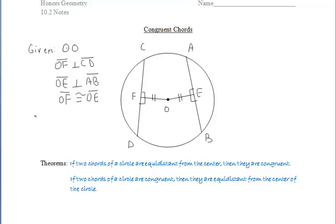For the first one, we are told that if two chords of a circle are equidistant from the center, so we know that segment OF is congruent to segment OE. And we want to then say if this happens, those two chords CD and AB are congruent.